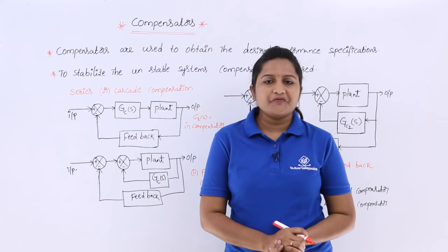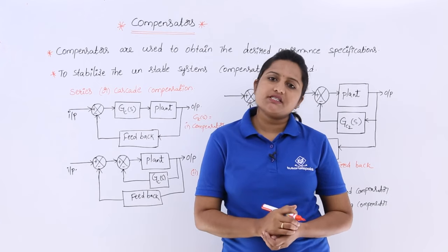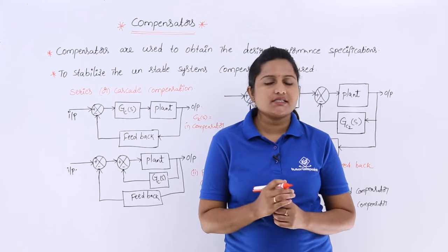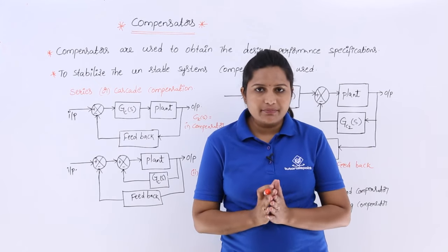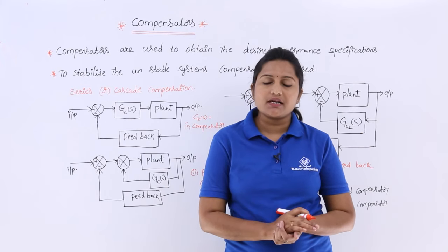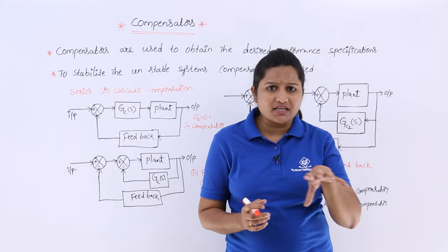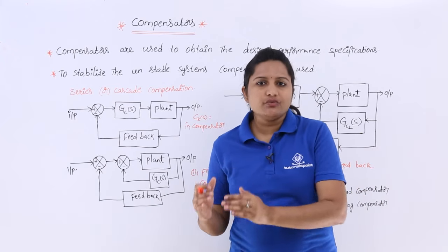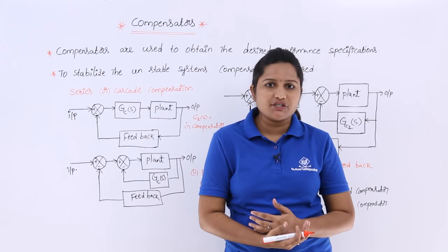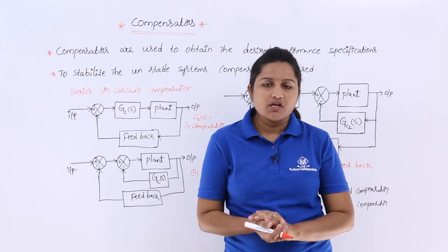In this video, we are going to discuss about compensators. Generally, compensators are used to get the required performance specifications. For example, if you want to stabilize an unstable system, you can use compensators. That means, how much compensation is required to get your performance specifications, that much amount can be given by these compensators.